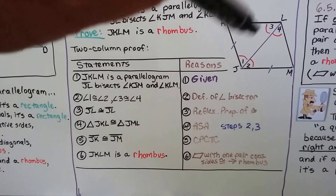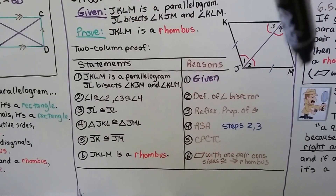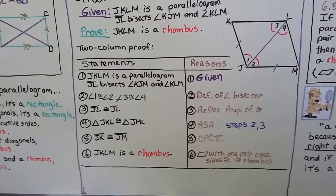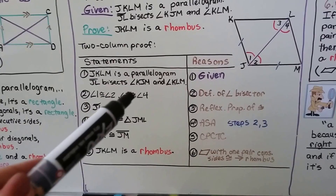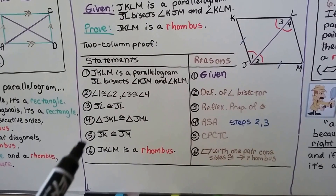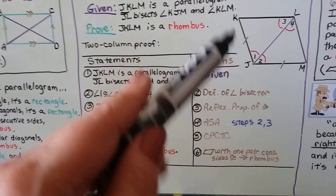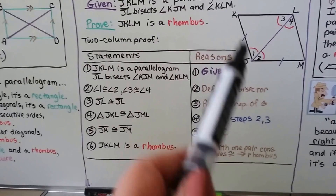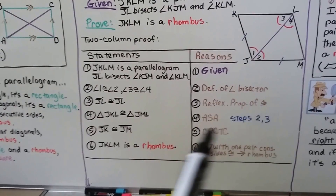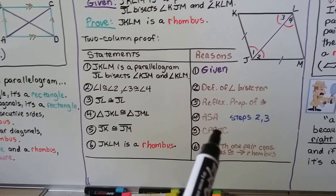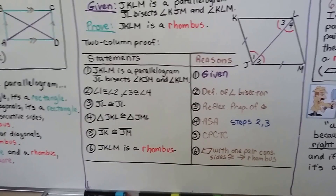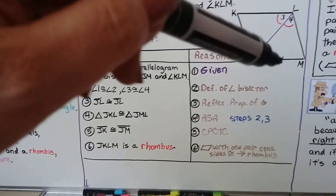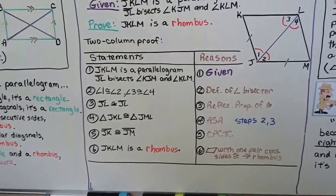Statement 4: triangle JKL is congruent to triangle JML by Angle-Side-Angle, from steps 2 and 3 — we have an angle, a side, and an angle. Statement 5: segment JK is congruent to segment JM by CPCTC — corresponding parts of congruent triangles are congruent. Therefore JKLM is a rhombus, because it's a parallelogram with a pair of consecutive sides congruent.